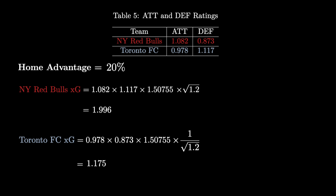With these stats I can calculate the expected goals (XG) for both teams. I'm also going to add a 20% XG advantage to the home team, which has been consistent throughout the season. This can be done by multiplying the home team's expected goals by the square root of 1.2 and then multiplying the away team's expected goals by the reciprocal. This gives us the expected goals for each team in the matchup.